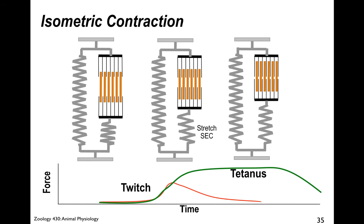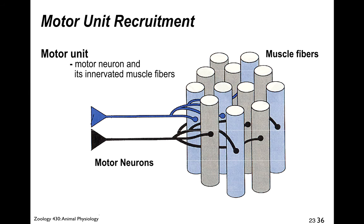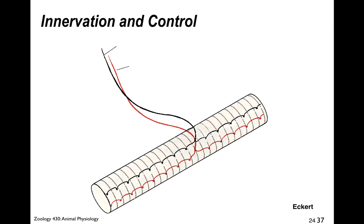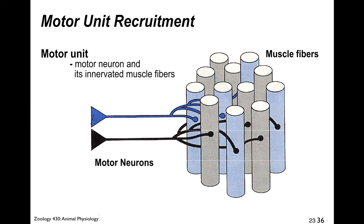To get maximum force generated, instead of a single twitch you need many, many twitches — that is called tetanus, which you'll be studying in lab this week. Motor unit recruitment: the motor unit is the motor neuron and all of its innervated muscle fibers. In a vertebrate, control is achieved by having multiple motor pools, and to get bigger force or movement you recruit more and more motor units by adjusting the number of motor neurons that are firing.